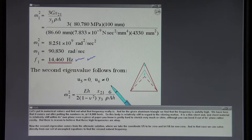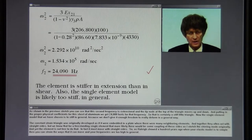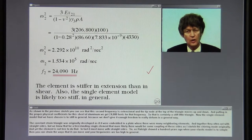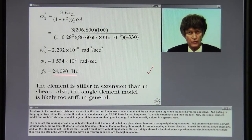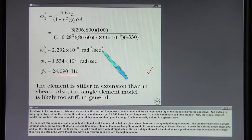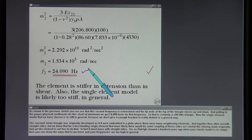The second eigenvalue comes from the alternate solution where we take the coordinate U5 to be 0 and let U6 be non-zero. In that case, we can solve directly from our set of uncoupled equations to find the second natural frequency. As shown in the previous sketch, you can see that this second frequency is extensional and the tip node at the top of the triangle moves up and down. Putting in the proper physical coefficients for this sheet of aluminum, we get 24,000 Hertz for that frequency. So that is certainly a stiff little triangle.